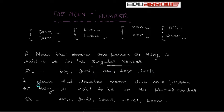a noun that denotes more than one person or thing is said to be in the plural number. Example: Boys, girls, cows, trees and books. So, there are two numbers in English: Singular number and plural number.